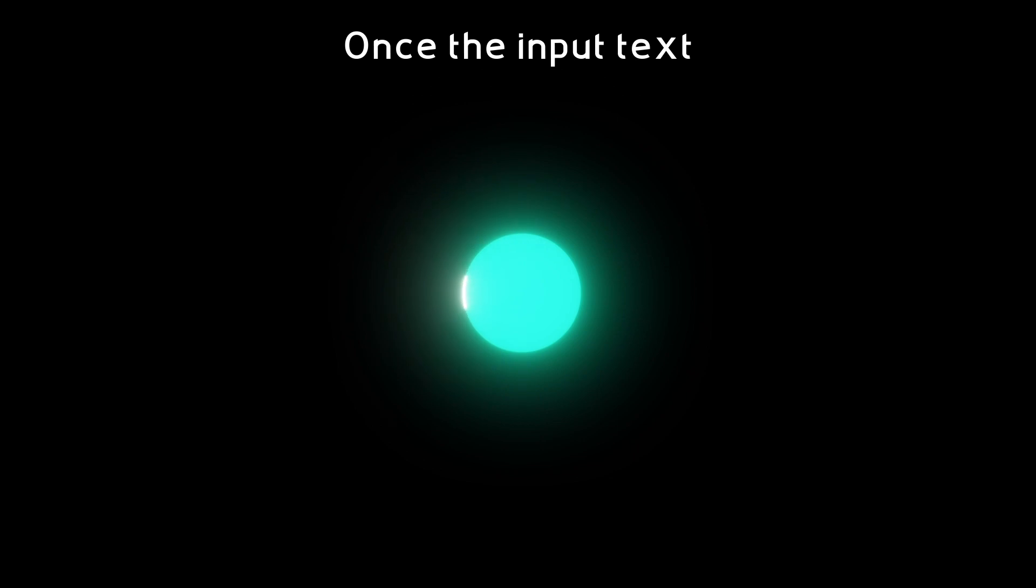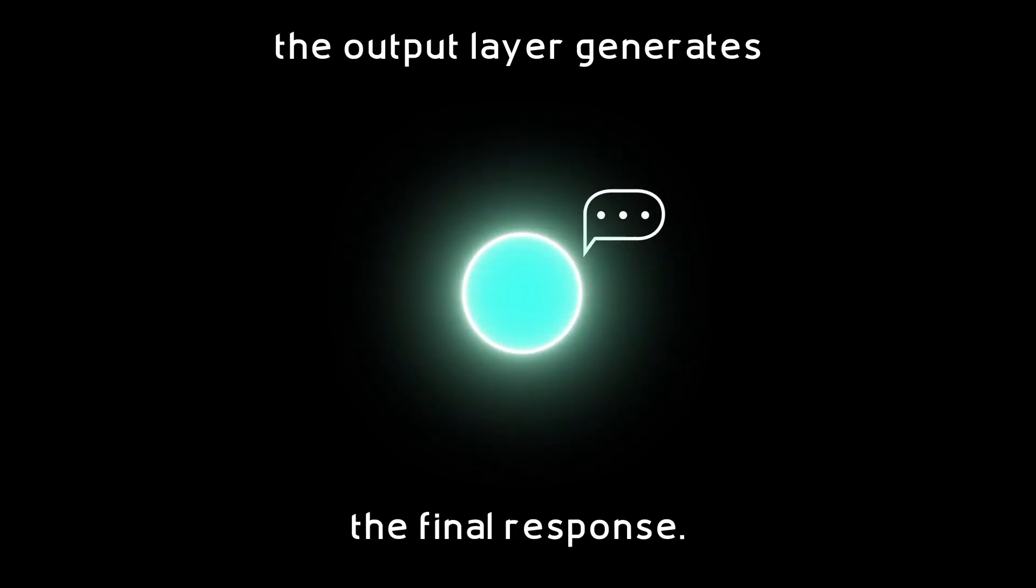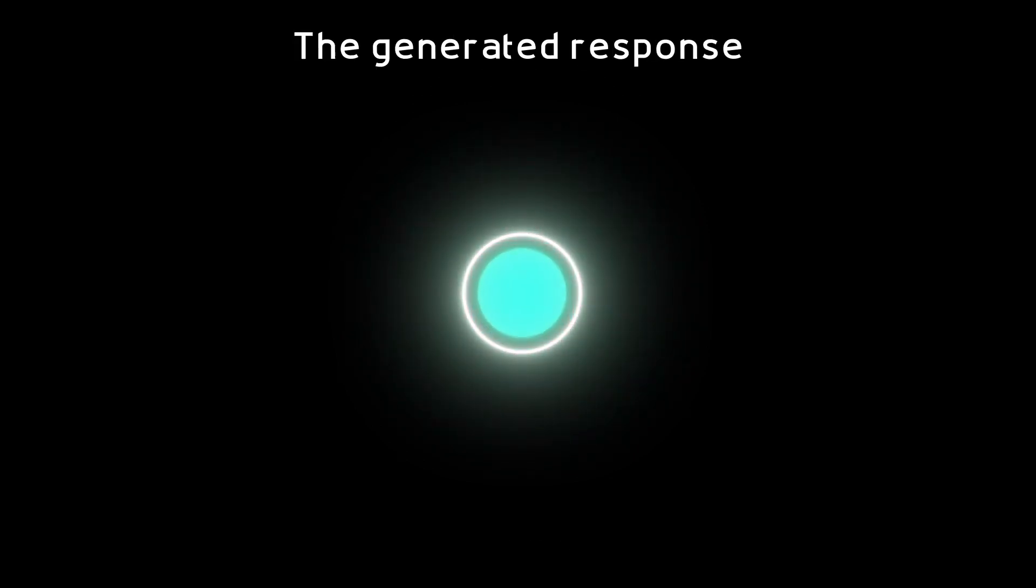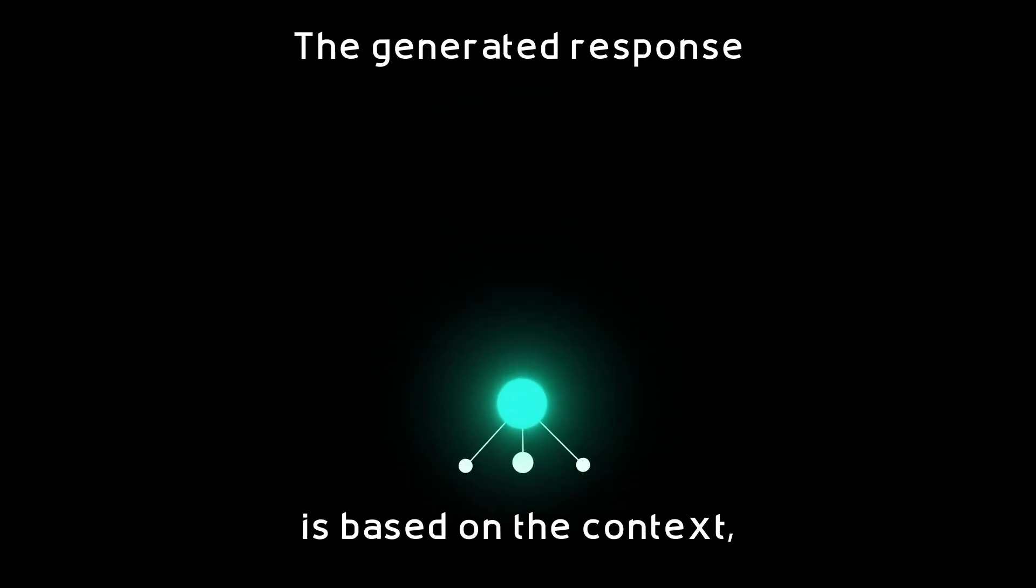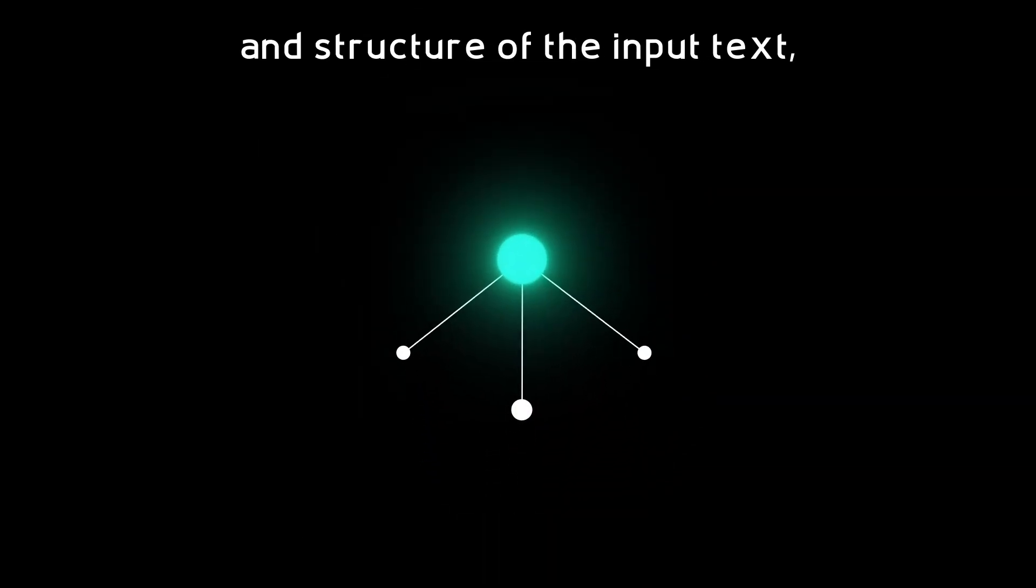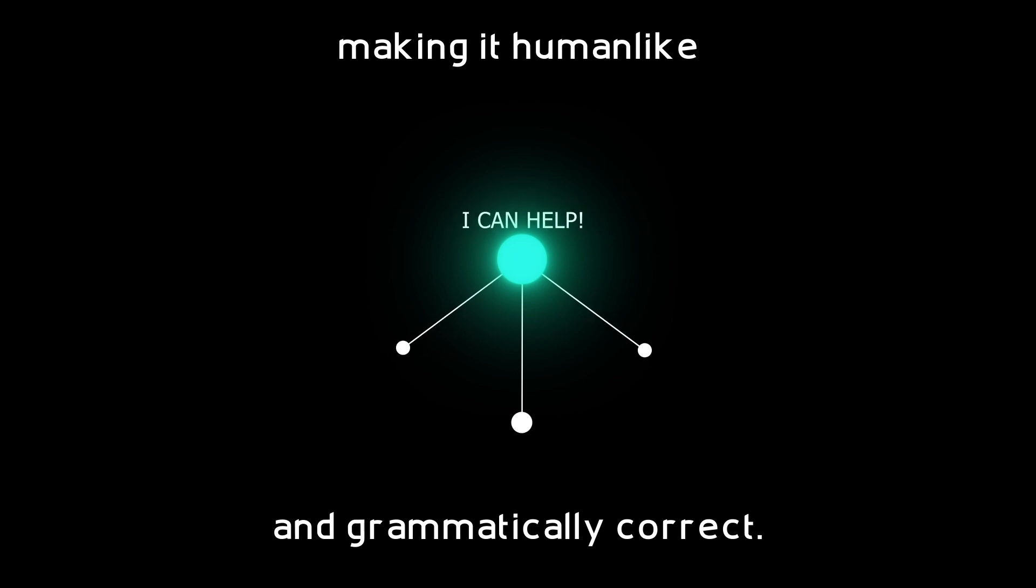Once the input text has been processed, the output layer generates the final response. The generated response is based on the context, tone, and structure of the input text, making it human-like and grammatically correct.